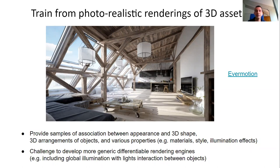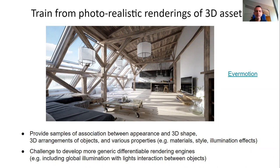One thing we do heavily throughout all three parts of my talk is to train from as photorealistic as possible rendering of 3D assets found on the internet. This provides samples of the basic association between a pixel patch and curvature in 3D, examples of arrangements of objects in scenes, and various properties like material style and illumination effects across objects. This naturally motivates developing more advanced differential rendering engines that can be plugged into end-to-end training pipelines, including global illumination effects like light interaction between objects and shadows.